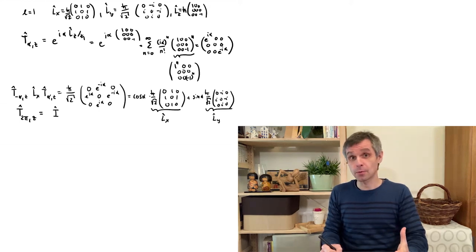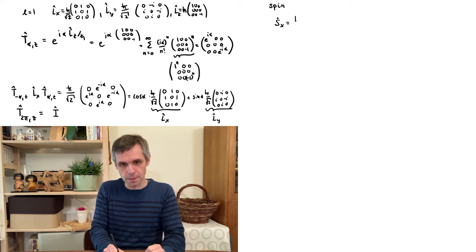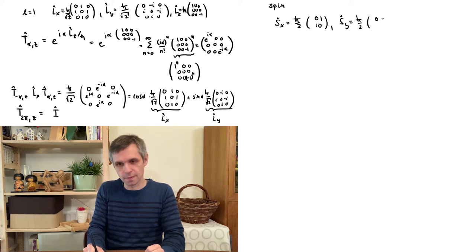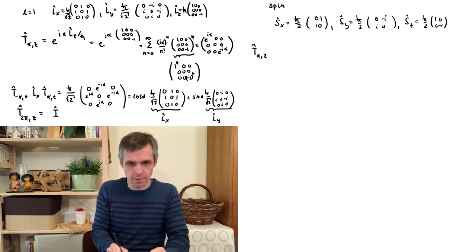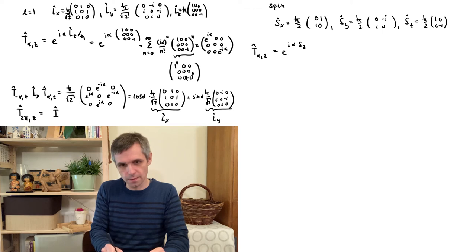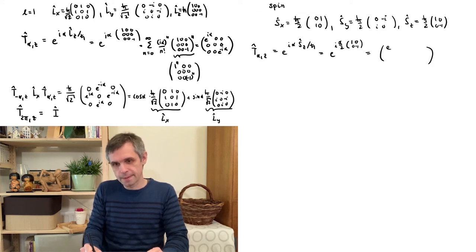We have now seen the direct relation between angular momentum and rotations in three dimensions. Let us next look at how this works for spin. For spin we can proceed in a very similar manner to the explicit l = 1 case, using the explicit forms of the spin operators, which take the form of two-by-two matrices. The rotation operator about the z-axis can then be written down explicitly, starting with the general expression and inserting these two-by-two matrices.